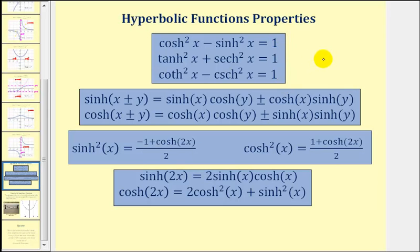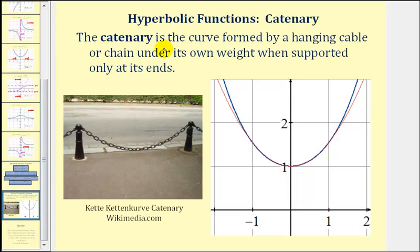I want to end on talking about one of the main reasons why hyperbolic functions are so important. A catenary is a curve formed by a hanging cable or chain under its own weight when supported only at its ends. For example, the chain in this picture is forming a catenary, and the catenary is formed by a hyperbolic function. It's often mistaken for a parabola formed by a quadratic function, but it's not. Whenever you see a power line or a phone line being supported at two ends, the shape would be a catenary formed by a hyperbolic function.